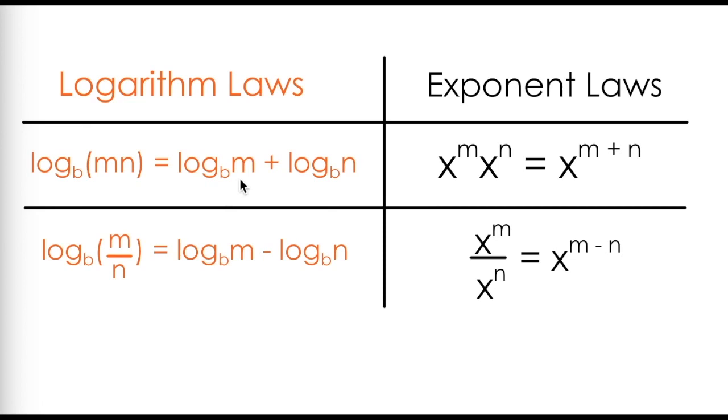So I can say the log of base b of m plus the log of base b of n is equal to log base b of the product of m and n. I can say the subtraction of two logarithms with the same base results in the log of the division of the two things I'm taking the log of. So both of these log laws are very similar to their exponent law counterparts.